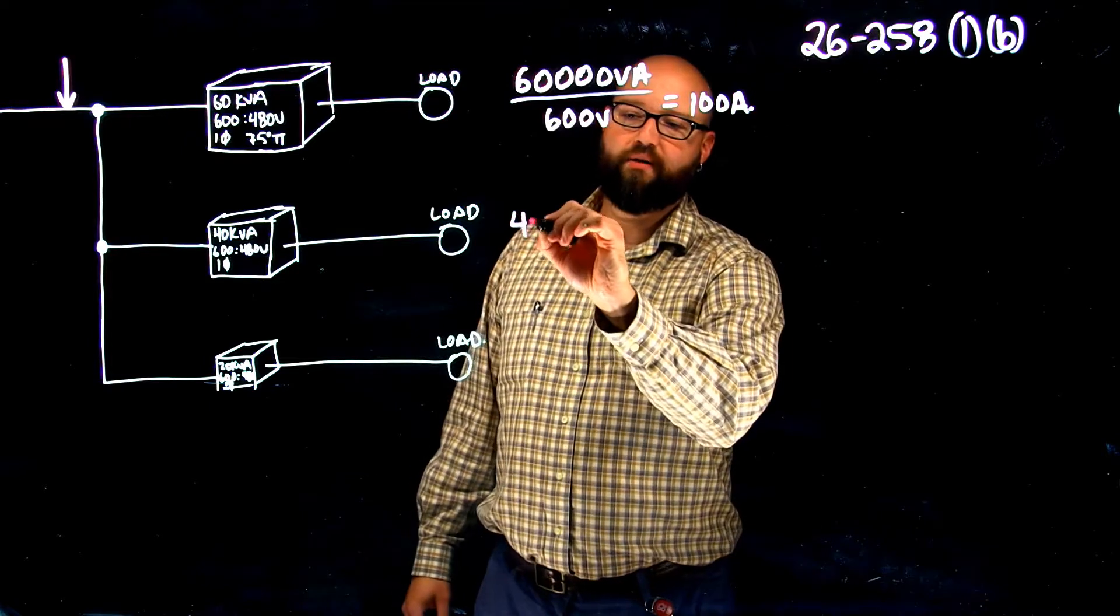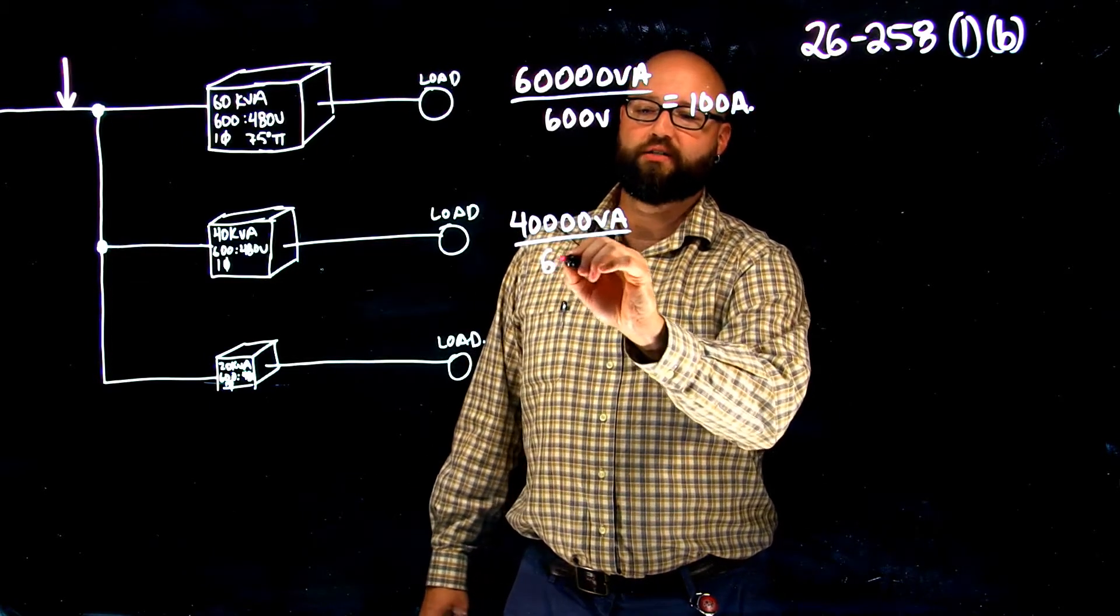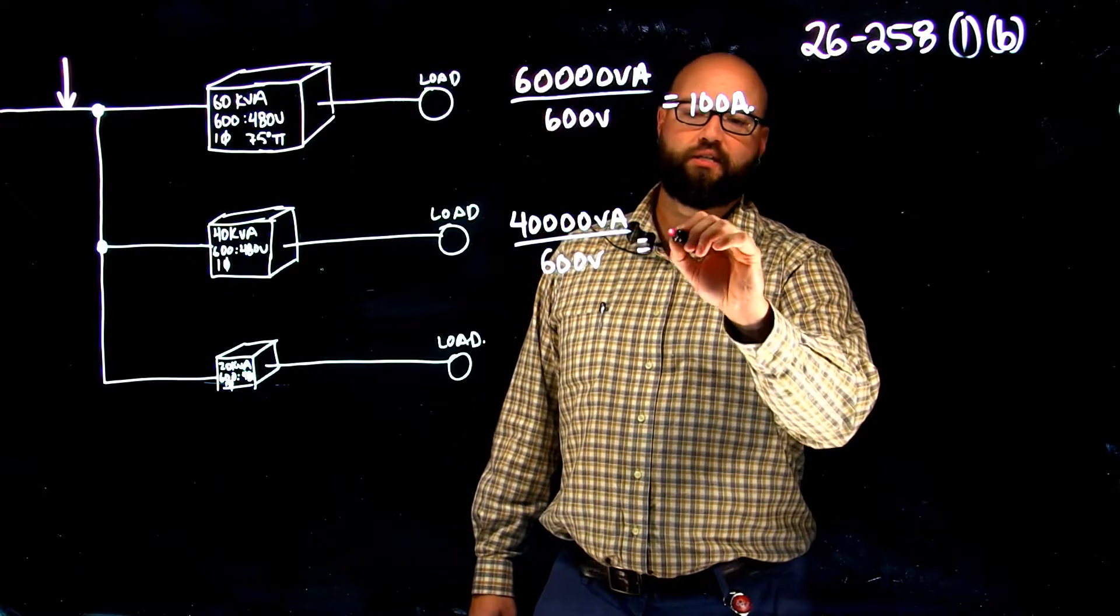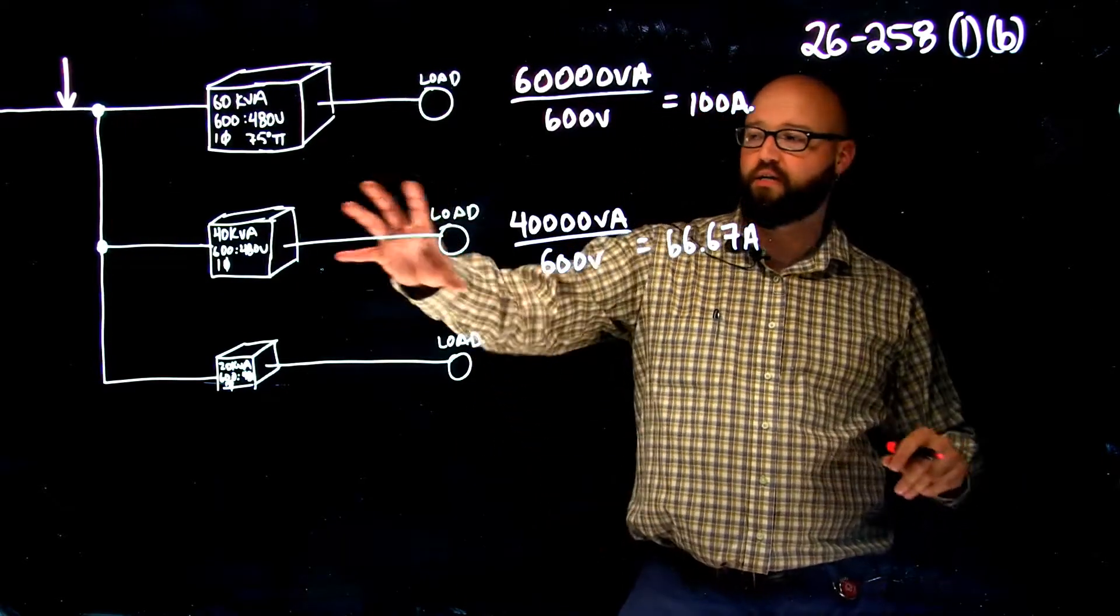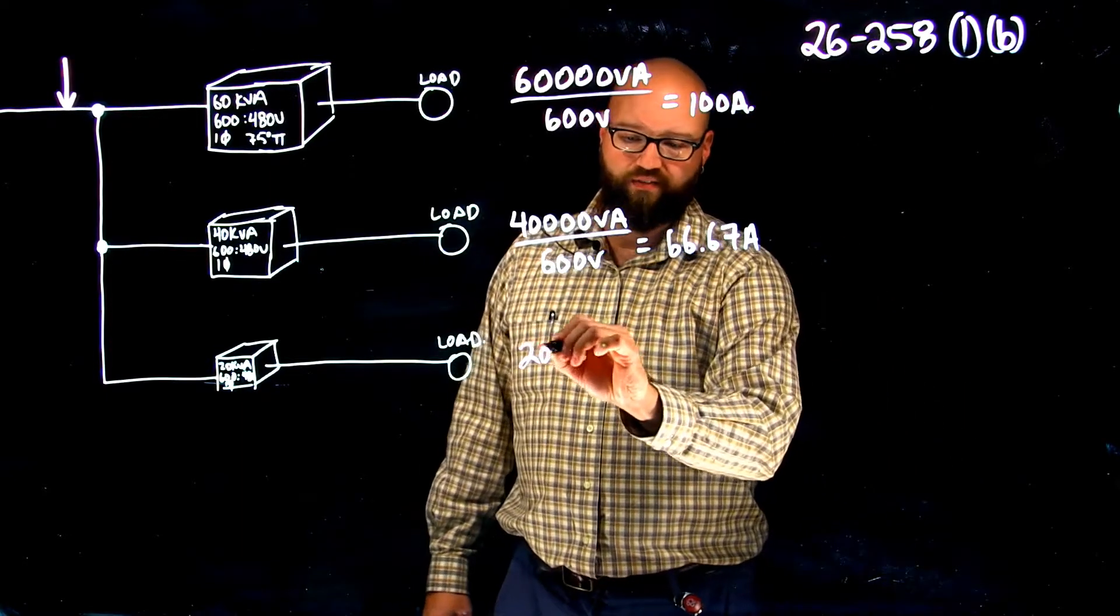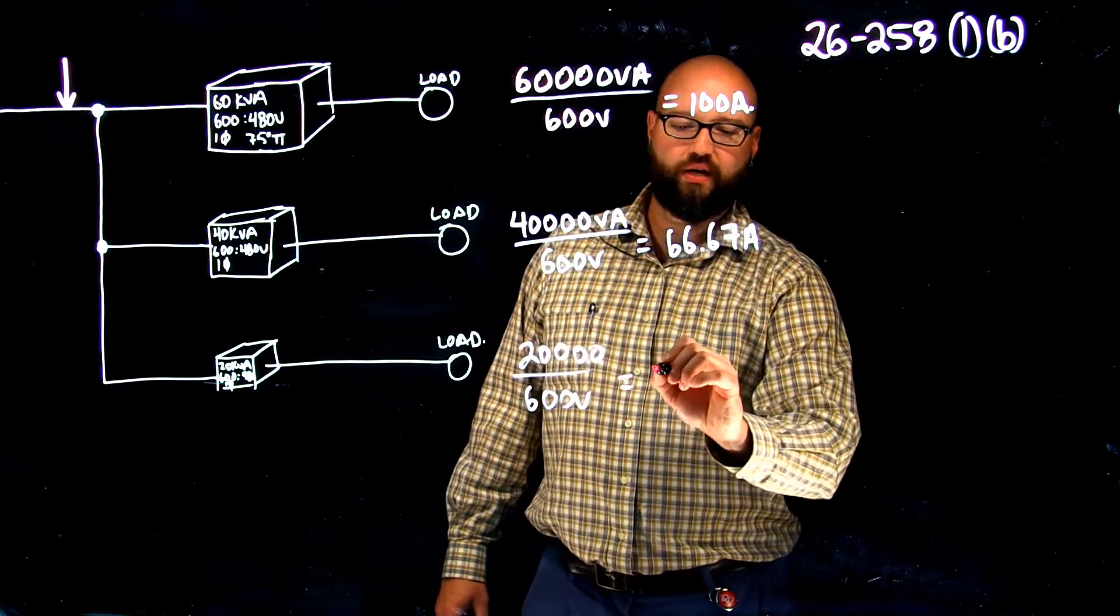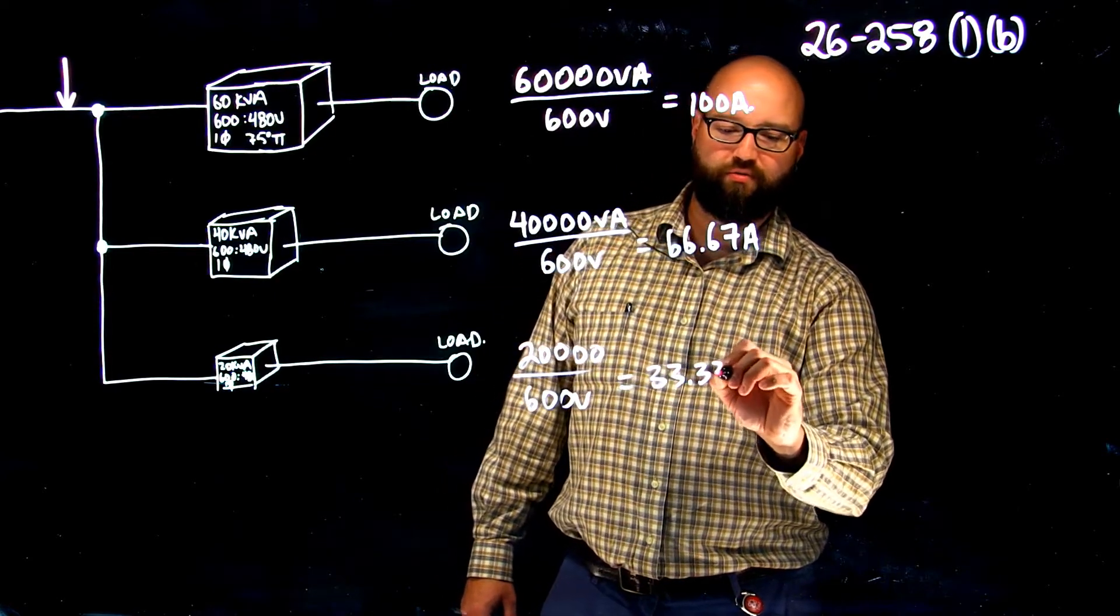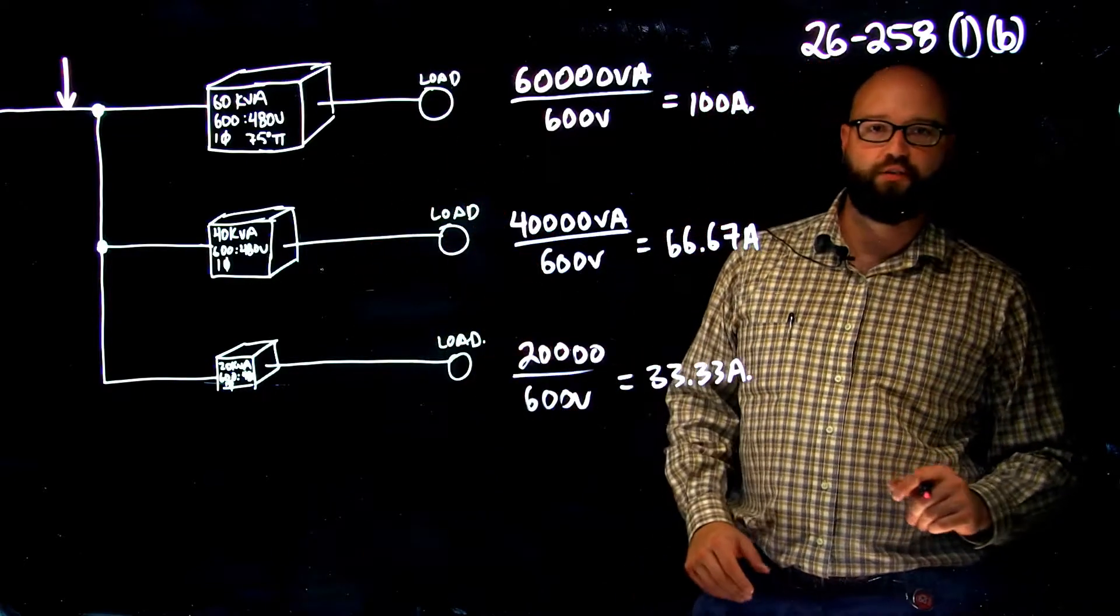Next, we move on to our 40 kVA. Divided that by, again, our 600 volts, which gives us 66.67 amps for rated primary. And for our little 20 kVA, divided by 600 volts gives us 33.33 amps. So, there's the rated primary current of each one of our transformers.